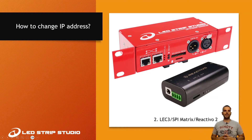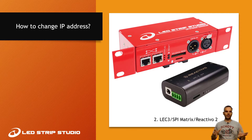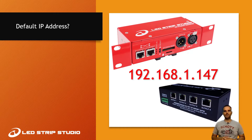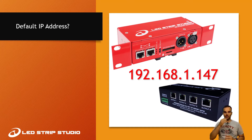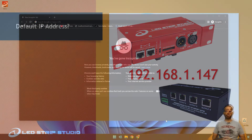Now the question is how to change the IP address of the LEC3 or SPI Matrix. There is a little help: by default, when you obtain the device, it already has the IP address set. The default IP address for LEC3 and SPI Matrix is 192.168.1.14. This is the IP address you can type into your web browser — and that's what we do now.